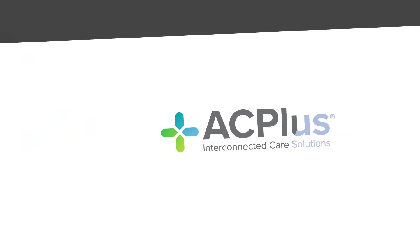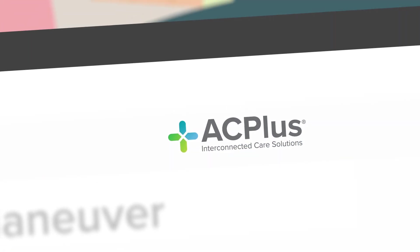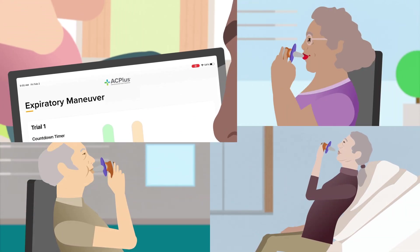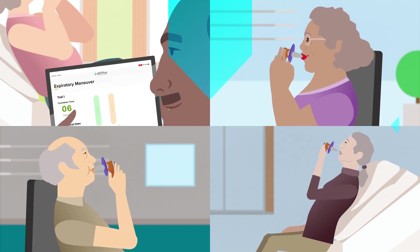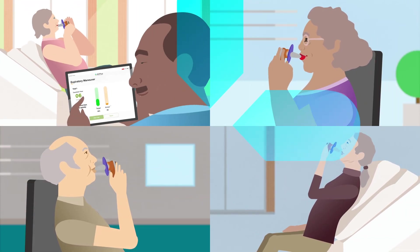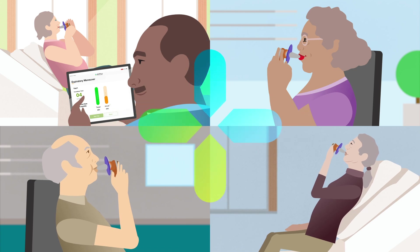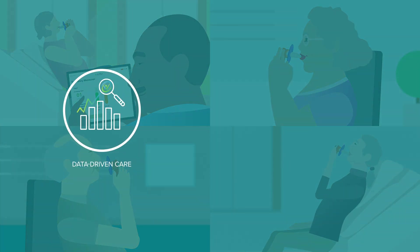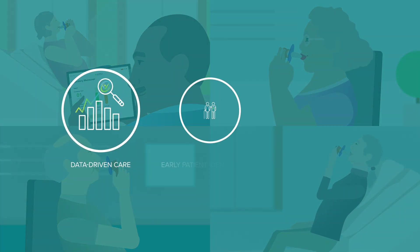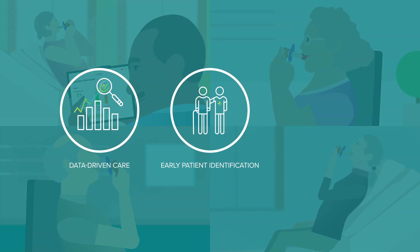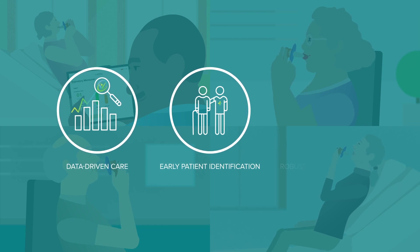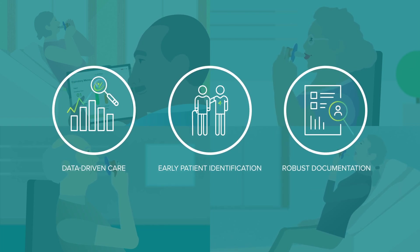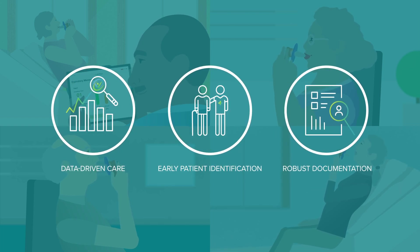Meet AC Plus Respiratory Assessment, or ARA — an innovative software enabling skilled nursing operators to identify patients with pulmonary dysfunction and provide them with the care they need. ARA can be used during their initial assessment, providing the precise data needed to build an individualized treatment plan and supporting the documentation required to justify respiratory care.